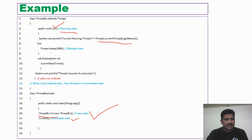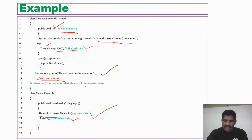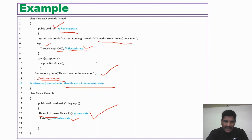When the current running thread invokes the sleep method, it switches from running state to the blocked state. Once the 3000 milliseconds of the sleep method expires, the current running thread resumes its execution. When the run method exits, the thread is in the terminated state because it has finished its job.